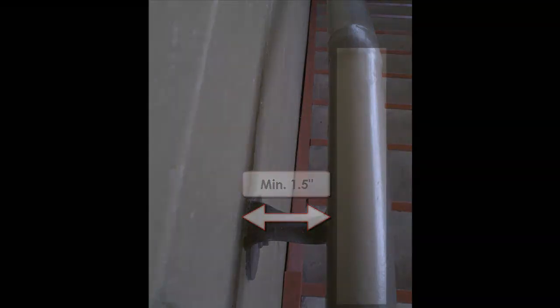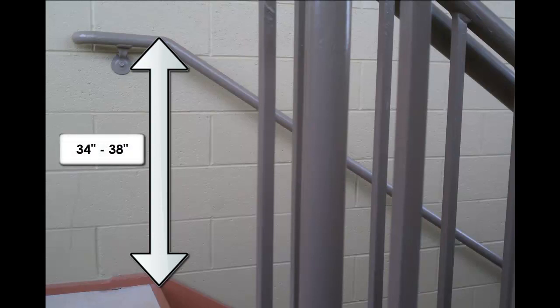Additionally, the open space between the backside of the rail and the attachment surface must be a minimum of 1 1/2 inches. The gripping surface of the rail must fall between 34 and 38 inches vertically above the stair nose.